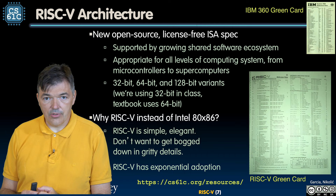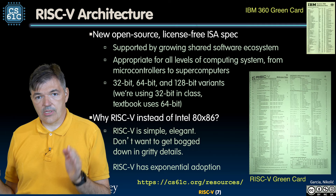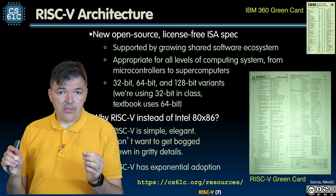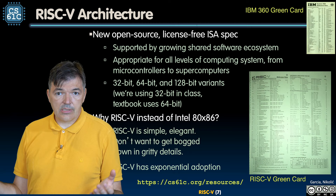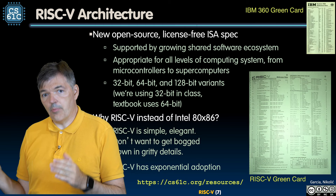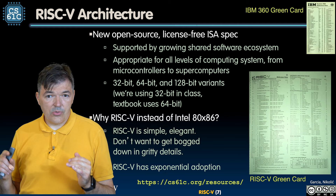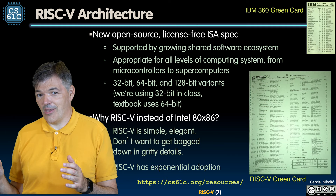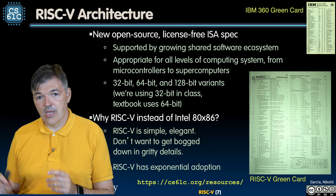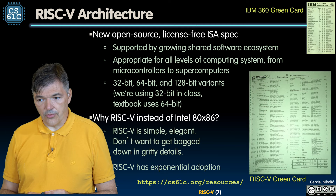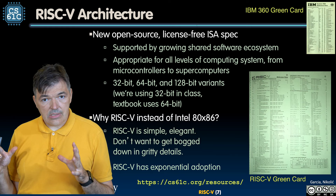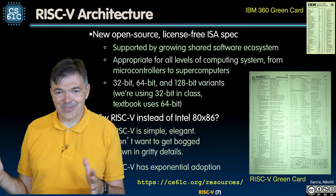RISC-V comes in different variants to support everything from tiny microcontrollers to big computers: 32-bit, 64-bit, and 128-bit variants, indicating how large the words the processor operates on are. In class we use the 32-bit version (RV32), though the textbook covers the 64-bit version RV64. The full architecture we cover in class fits on one page — called the green card, named after the famous IBM 360 green card from the 1960s.